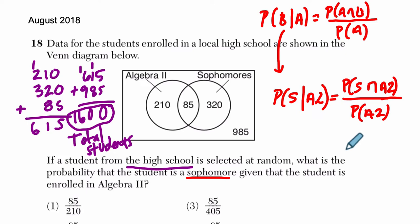Does that help me? I don't know. Let's see. So the probability that they're a sophomore and in algebra 2, well, that's these 85 students right here. Okay, I like that. 85 out of all the students, 1,600.